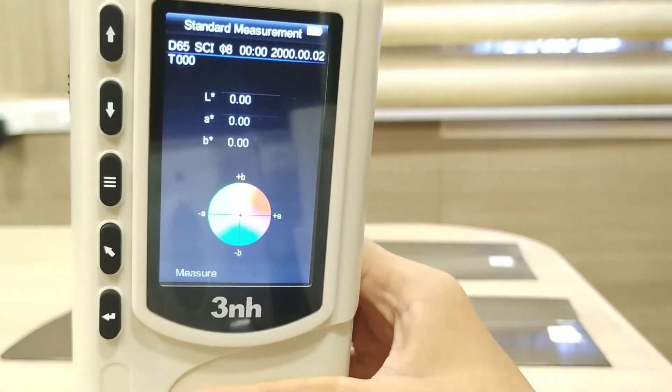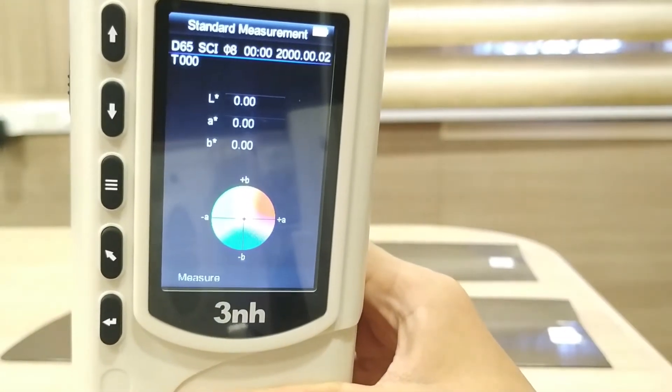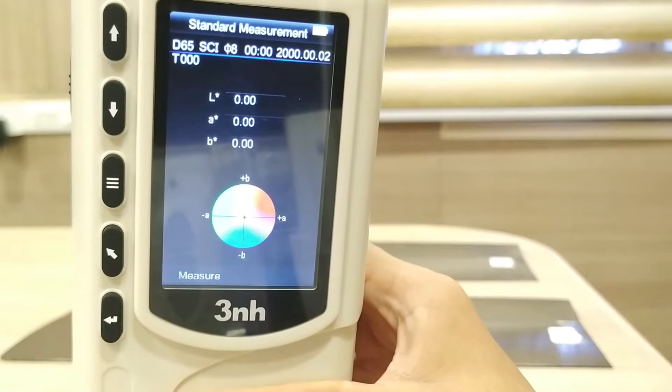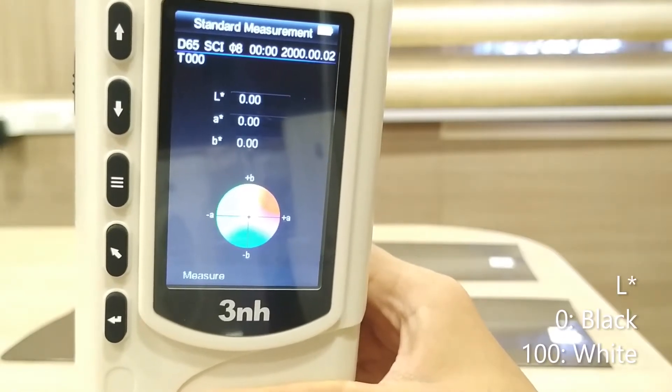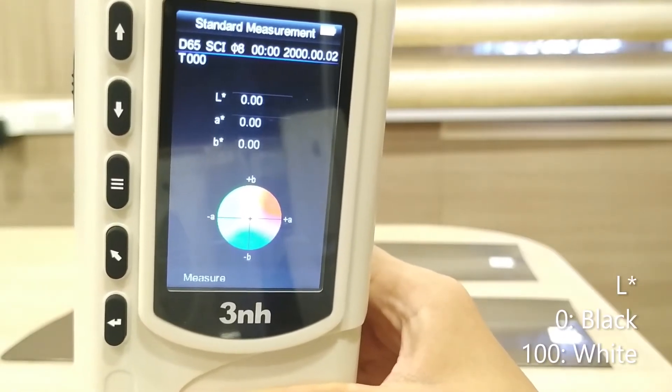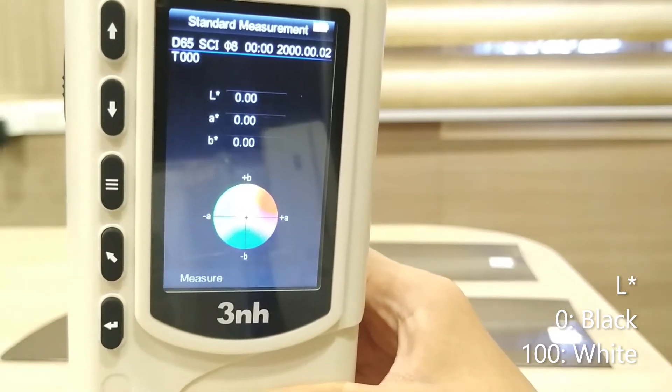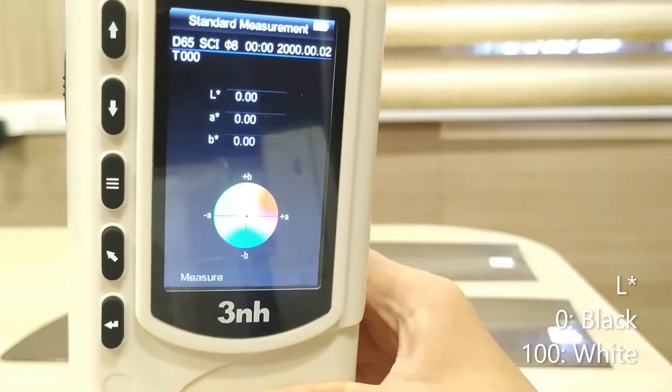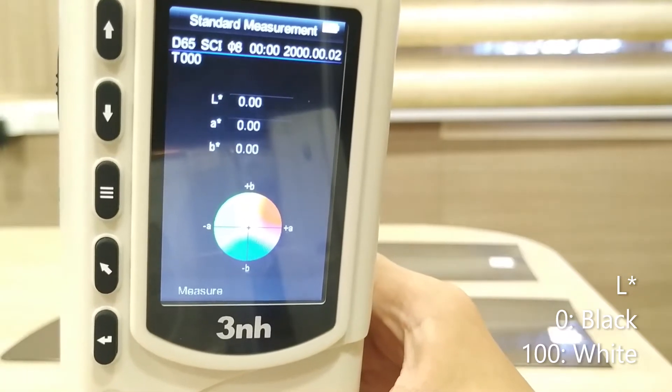This instrument uses the LAB color measurement scale. The L represents black to white, and the numerical range is from 0 to 100. This means that 0 indicates black and 100 indicates white color.